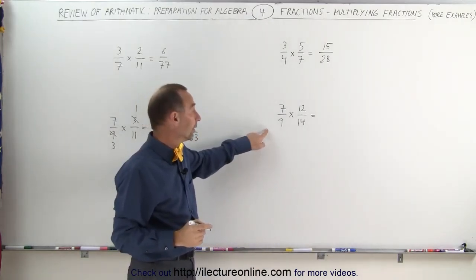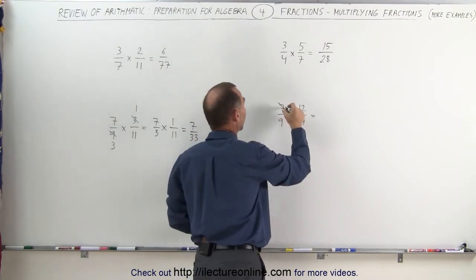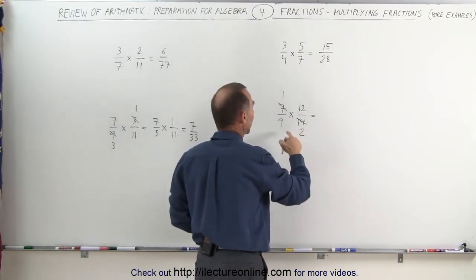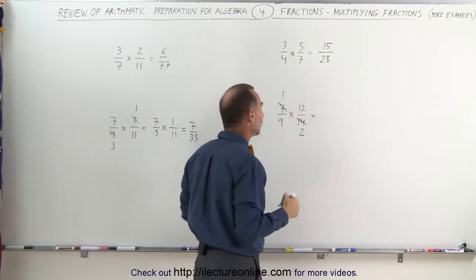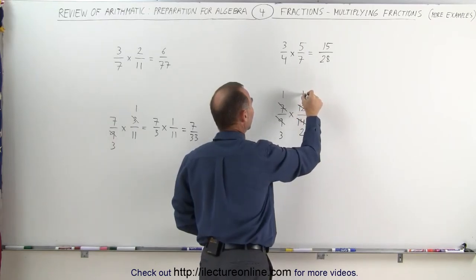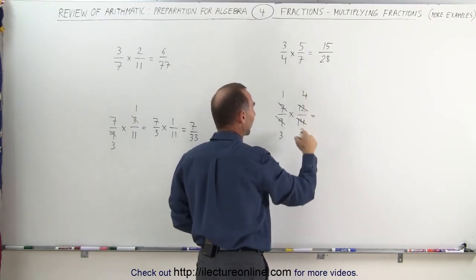On this example here, 7 and 14, well, you can see that they can be divided by 7. 7 divided by 7 is 1, 14 divided by 7 is 2, and 9 and 12, they're both divisible by 3. 9 divided by 3 is 3, 12 divided by 3 is 4, and then you can see the 2 and the 4, I can divide those both by 2.